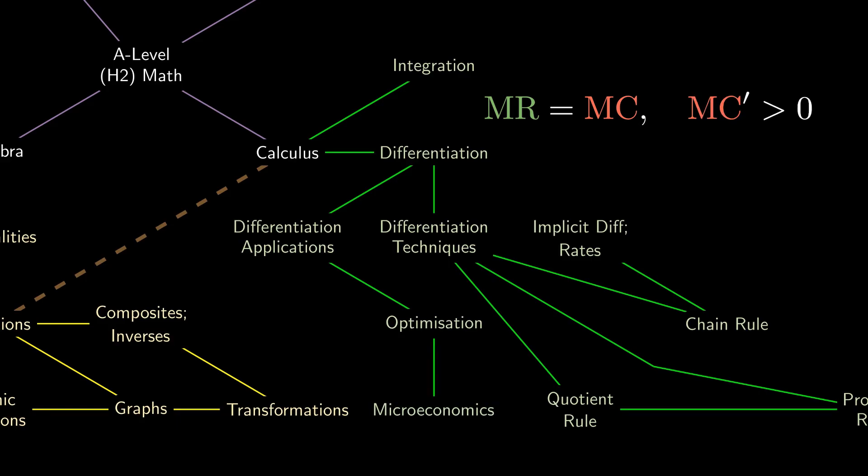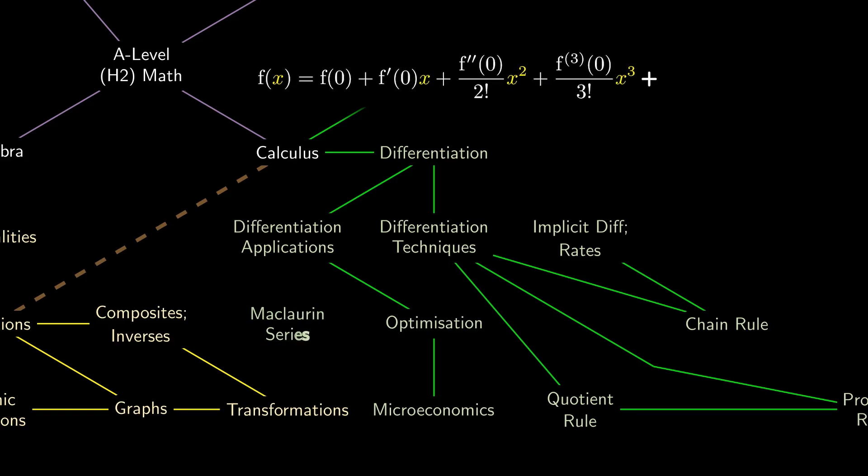We can even use these ideas to approximate really complicated functions using relatively simple polynomials. This is known as the Maclaurin series of the function, and all it requires are the derivatives of the function at zero.